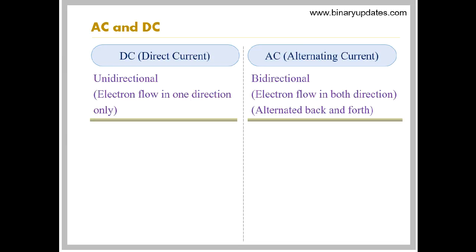DC is unidirectional. That is, electron flow in one direction only. While AC is bidirectional. That is, electron flow alternates back and forth. DC never fluctuates while AC fluctuates.